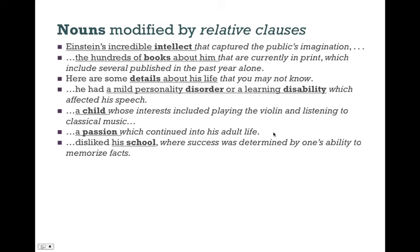He disliked his school, where success was determined by one's ability to memorize facts. He didn't like simply memorizing facts — he liked to apply them to real science and do things that were creative. Notice we use the word where, referring back to his school. Success is the subject; was determined is the verb in the passive voice, and we have the by-phrase: by one's ability to memorize facts. The word where represents the prepositional phrase in his school. When we join the two clauses together, we use the adverb where.